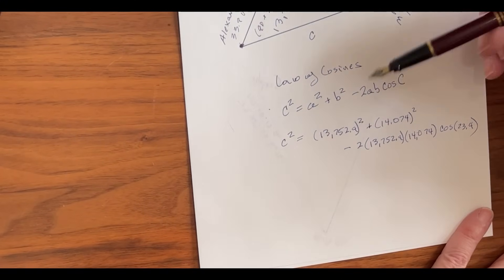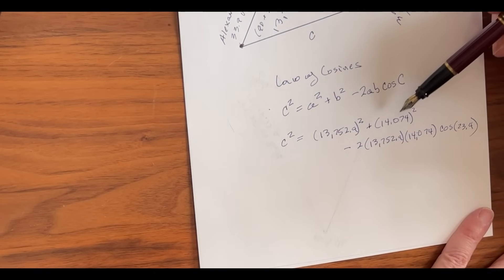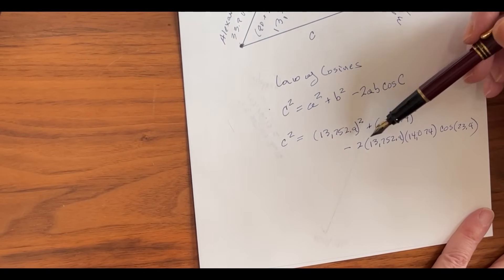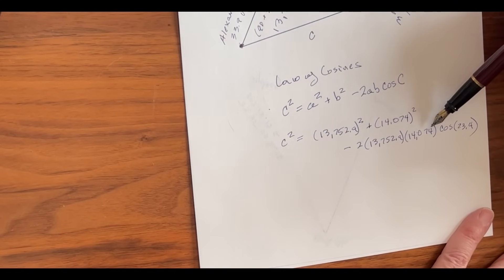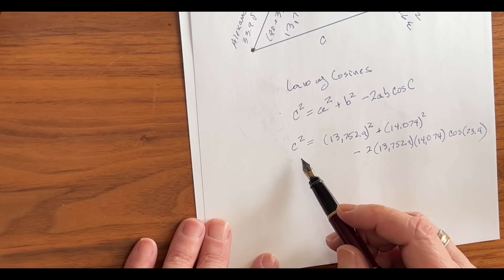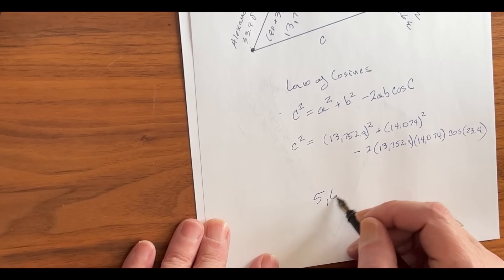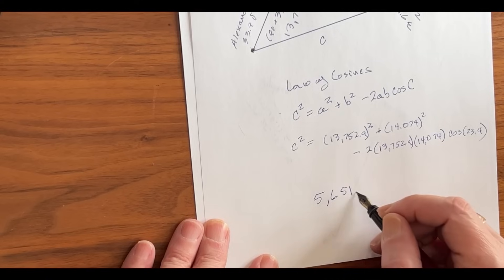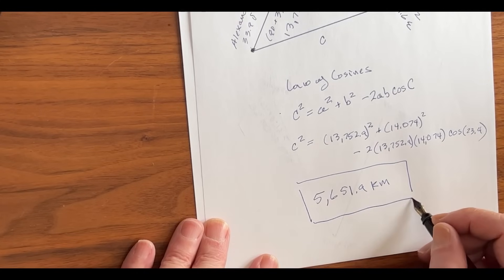Well, it's kind of a handful, but it's 13,752.9² plus 13,747² minus 2 times 13,752.9 times 13,747 times the cosine of 23.4 degrees. That'll give us the square of c. Then we take the square root of that number, and that gives us our final answer. In this case, it's 5,651.9 kilometers.